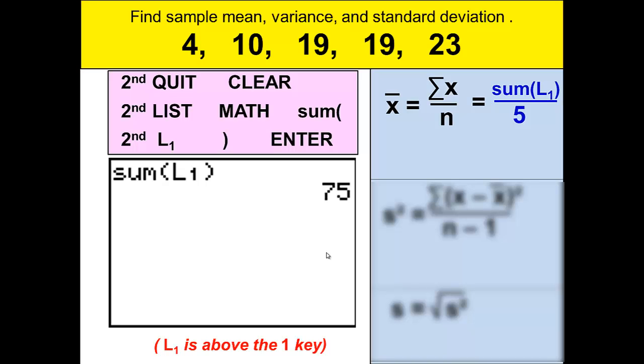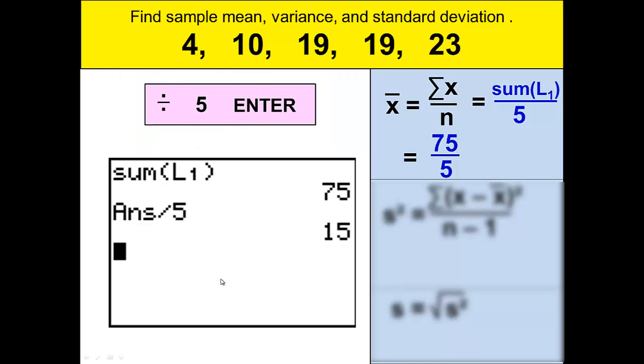The calculator should then give you the following screen and an answer of 75. Divide that by 5, and we should get the mean of 15. So our sample has a mean of 15.